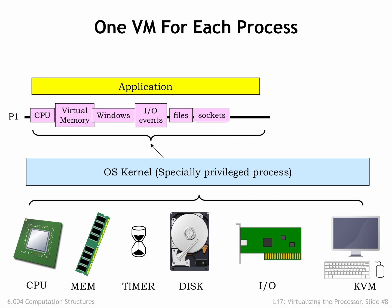For networks, the OS provides access to an in-order stream of bytes to some remote socket. It implements the appropriate network protocols for packetizing the stream, addressing the packets, and dealing with dropped, damaged, or out-of-order packets. To configure and control these virtual services, the process communicates with the OS using a supervisor call — a type of control-transfer procedure call that invokes code in the OS kernel.